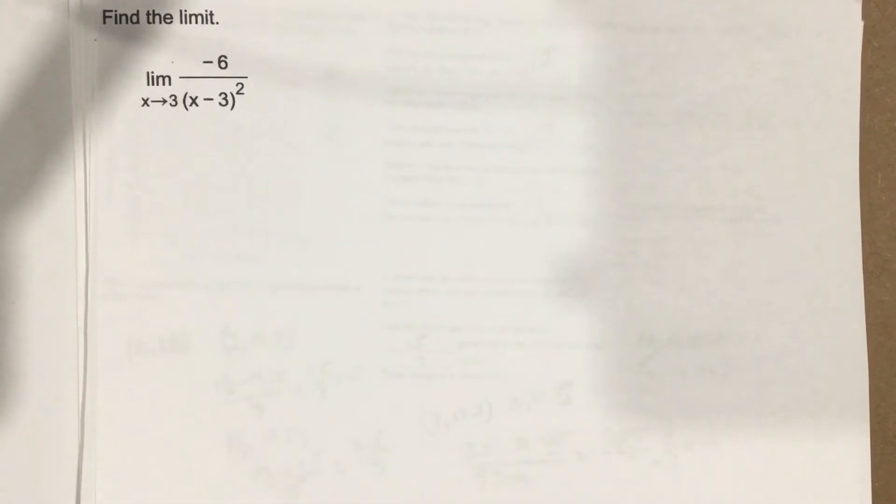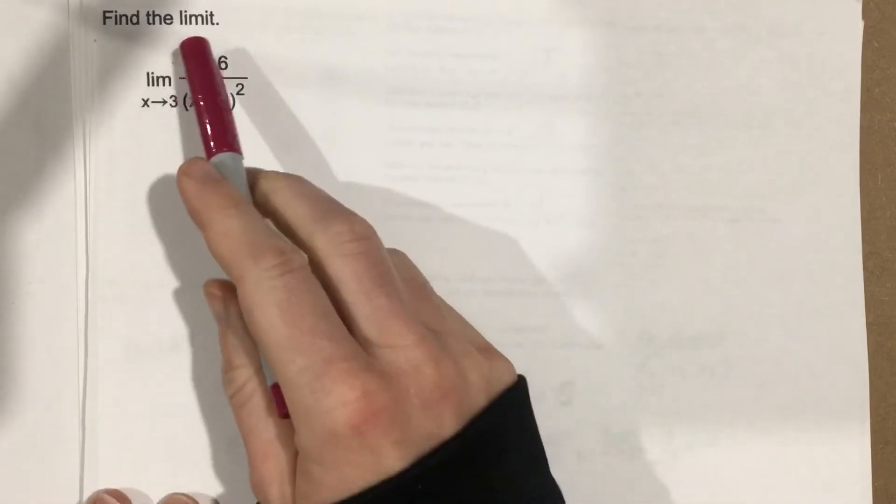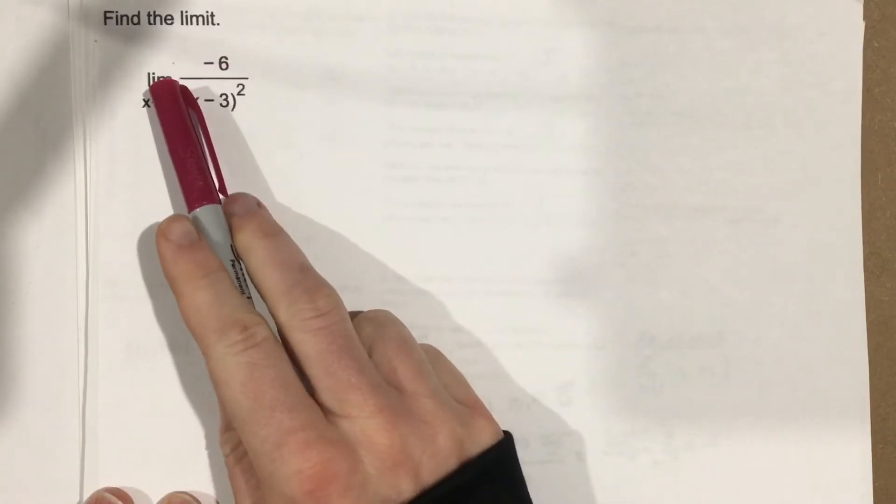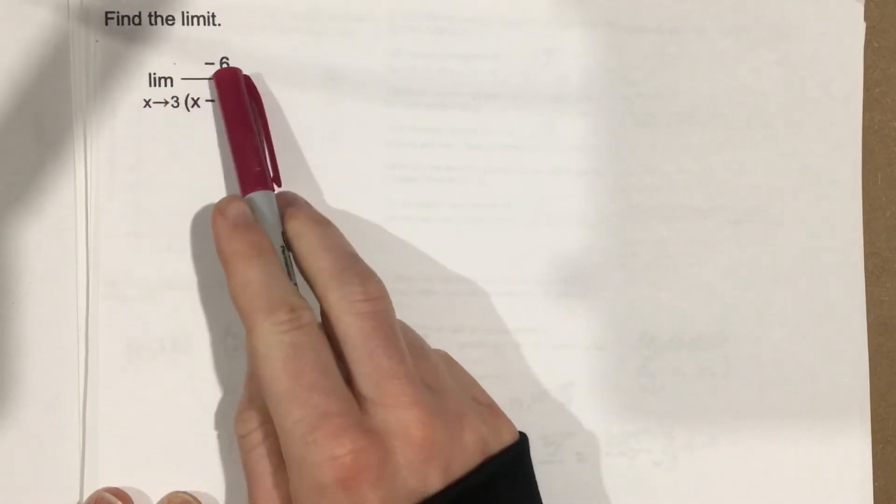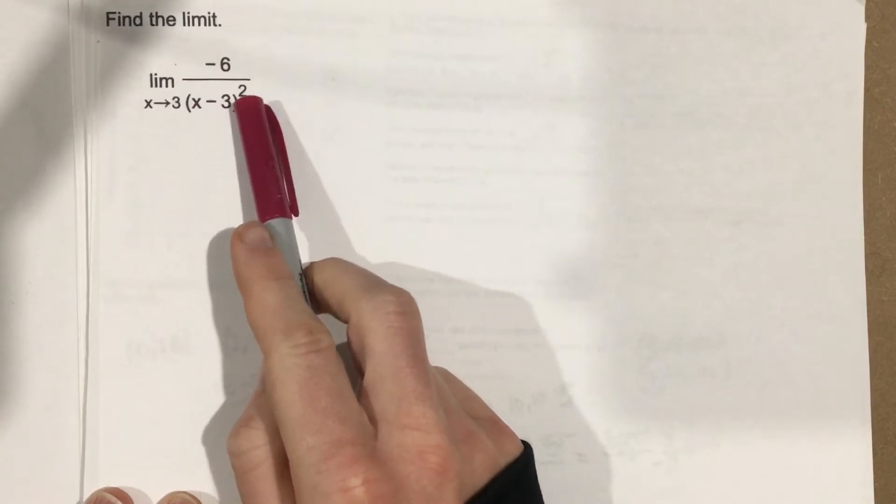This is problem number 5 for section 2.6. Find the limit as x approaches 3 of negative 6 over (x minus 3) squared.